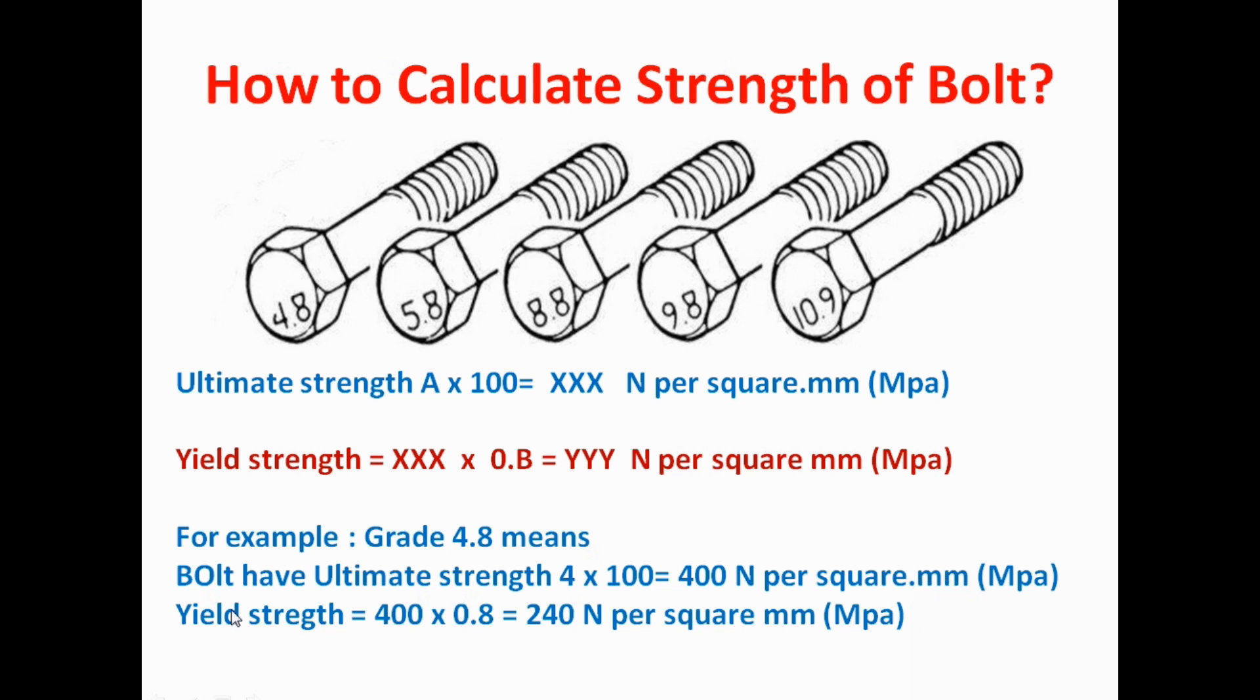For yield strength, we will use this formula. The ultimate strength times 0.B. Our ultimate strength is 400 Newton per square millimeter. We have already calculated. We put here. And our B value is 8. We will put in this formula 0.B, that means 0.8. After calculation, we are getting 240 Newton per square millimeter.